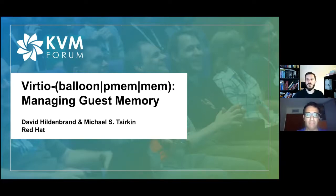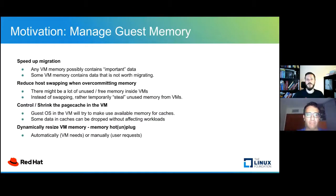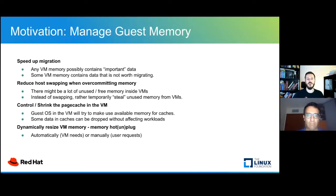What do we actually mean when we talk about managing guest memory? There are four different things we want to achieve with the virtual memory of our guest. First of all, we often want to speed up migration. From the hypervisor point of view, any memory is possibly worth migrating because it might contain important data. But in reality, there is often quite some memory inside virtual machines that is not worth migrating — for example, if it's simply free memory. You need some kind of handshake with your guest to identify that.